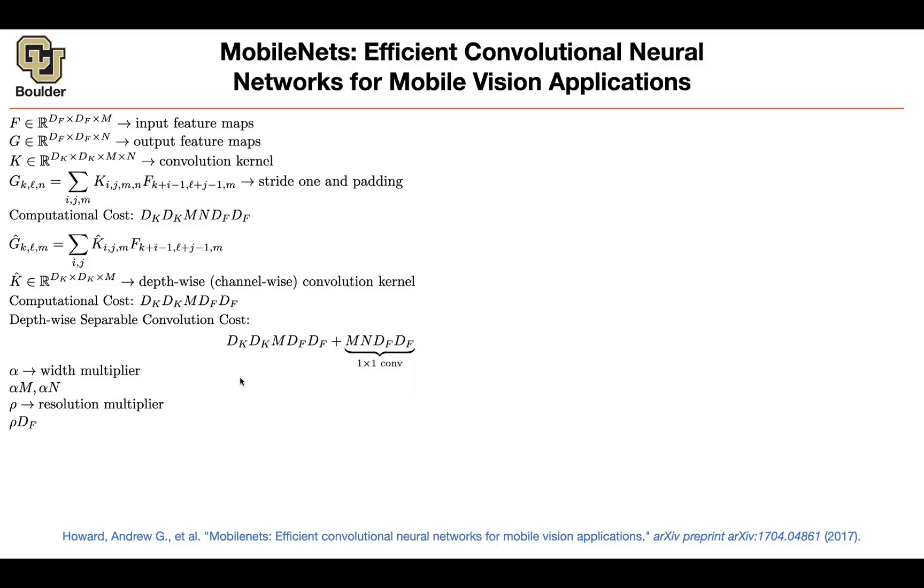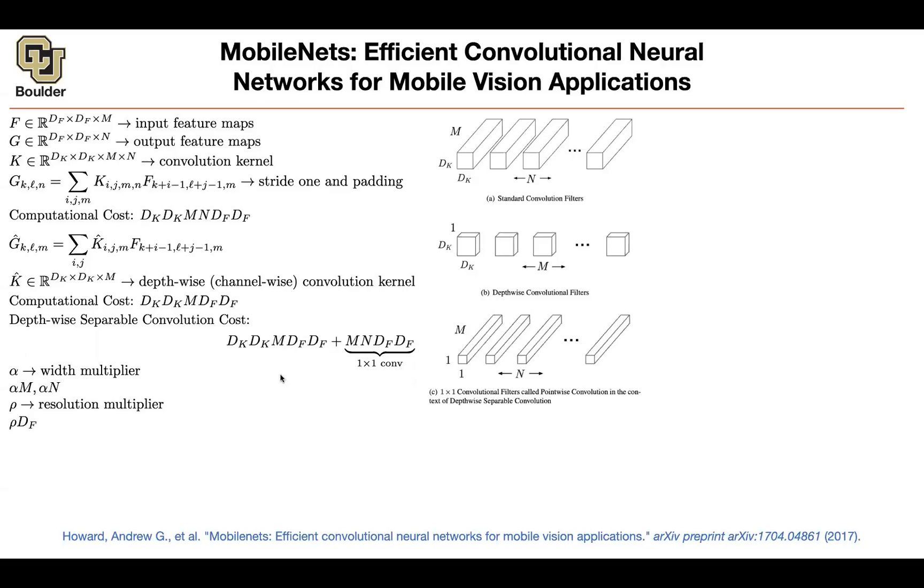And then we introduced a couple of parameters because we want to have some control over the capacity of our model, depending on the target device. The computational capacity and memory capacity of the target device is going to help us determine what's the best alpha and rho for us. Alpha is just controlling how wide our networks are, basically how many channels or feature maps we are going to have. And rho is the input resolution, which is going to control this part of the computational cost. And here is a visual inspection of what I just explained and the difference between a regular convolution and a depth-wise convolution and a one-by-one convolution.